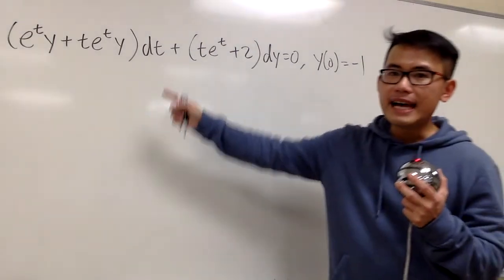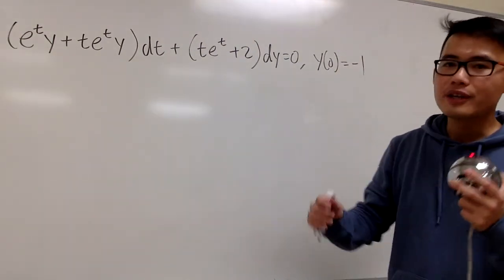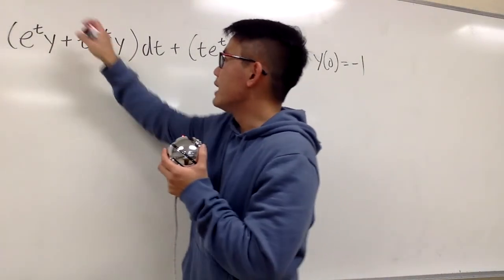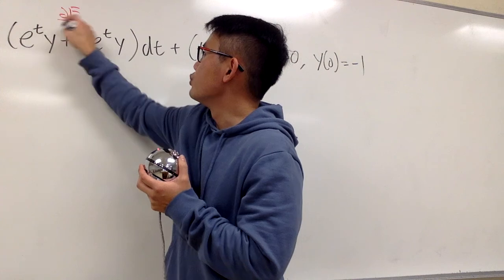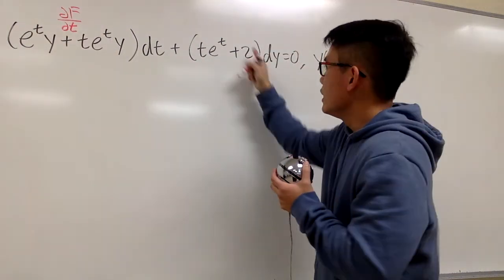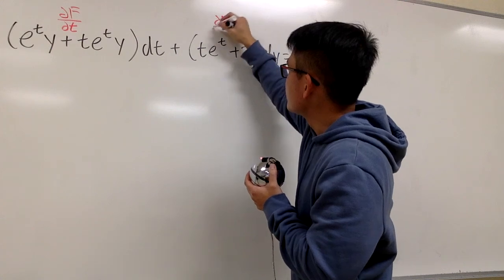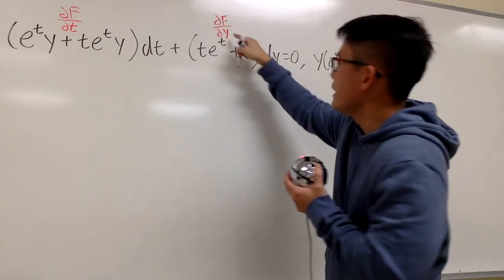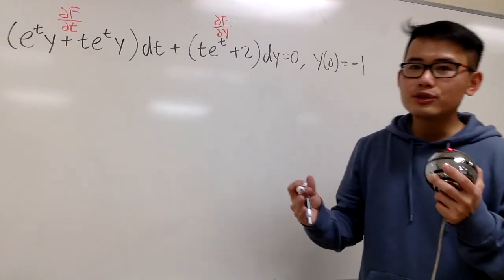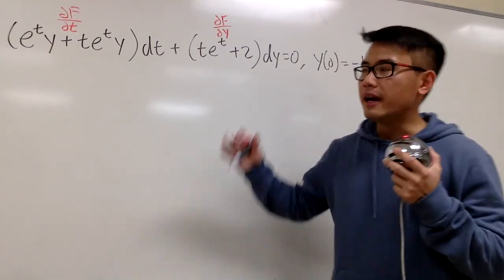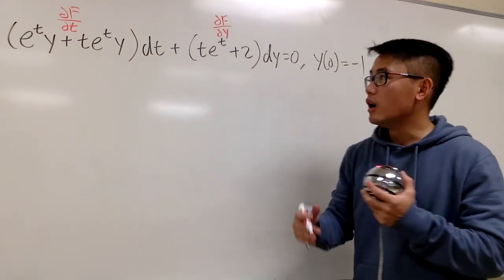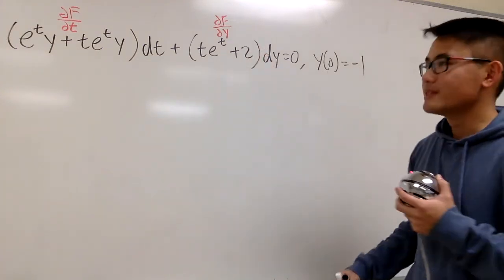If this is indeed exact, it means that we have a function — we call that capital F — so that the first expression represents the partial of F with respect to T, and the second represents the partial of that function with respect to Y. Now we have to check the mixed partials. If the mixed partials are the same, then this represents the total differential of capital F. So let's go ahead and do it.